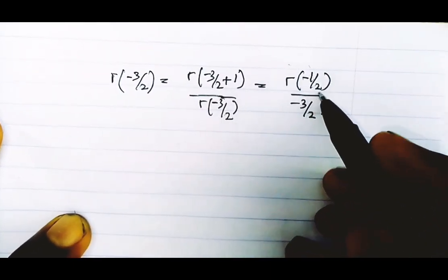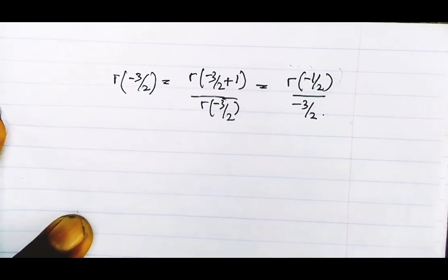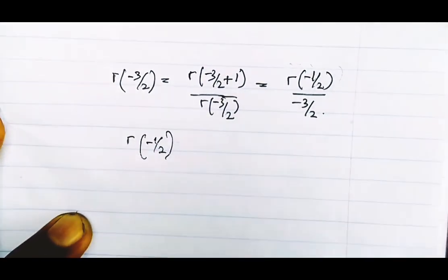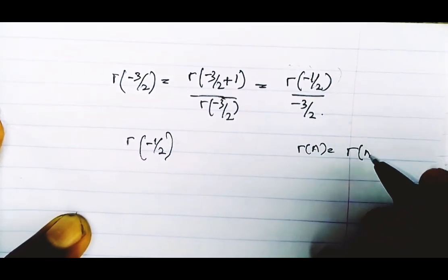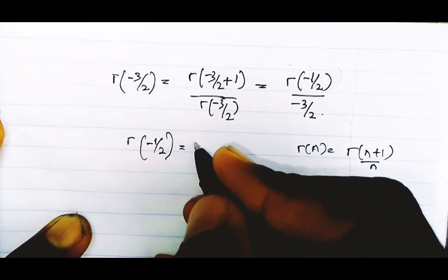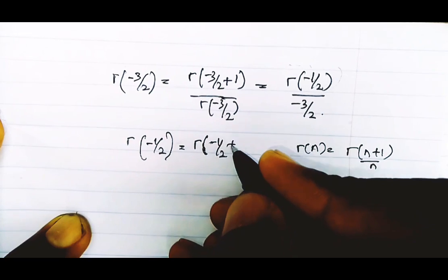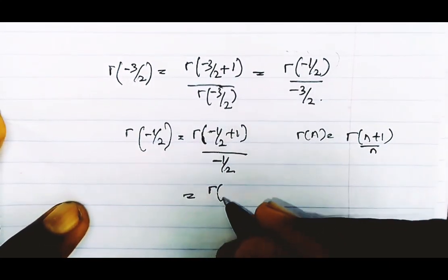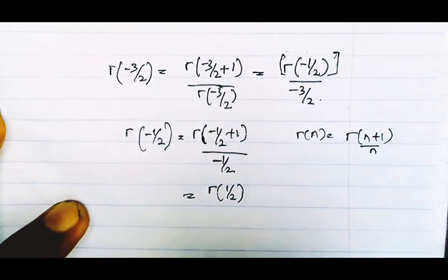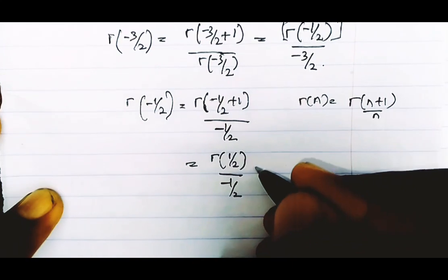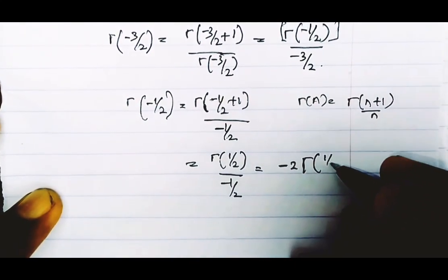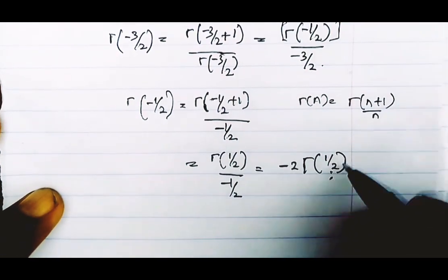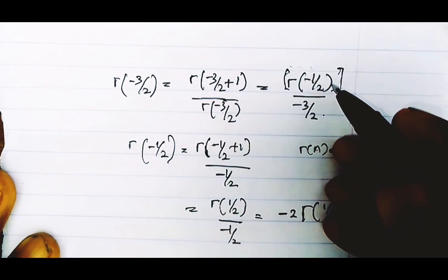Continuing: we apply the formula to gamma of minus one-half, giving gamma of minus one-half plus one divided by minus one-half. Minus one-half plus one gives one-half, so this equals gamma of one-half divided by minus one-half, which equals minus two times gamma of one-half. Now we can stop, since gamma of one-half is a known constant.